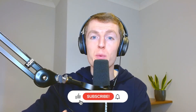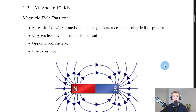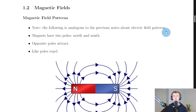Hey guys, Mr. Mitchell here. In this video we're going to look at magnetic field patterns. We're moving on from the theory on electric fields to look at magnetic fields now, and we're going to start by looking at magnetic field patterns. The first thing to note is that the following is analogous to the previous notes about electric field patterns, so what we're going to look at for magnetic field patterns is very similar to what we saw for electric field patterns.